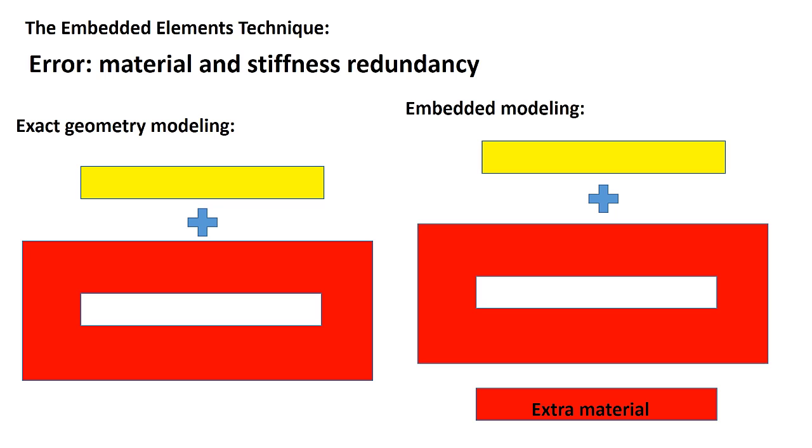However, in cases where the embedded volume fraction is significant and the stiffnesses of the two materials are comparable, we should compensate for this error. To do so, we should use reduced stiffness for the embedded part, which is the embedded stiffness tensor minus the host stiffness tensor. Please watch our next videos to learn more about this compensation.